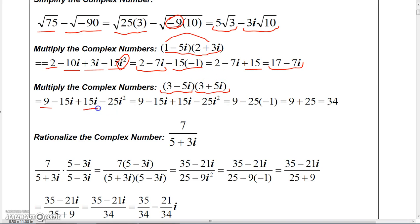And notice that 15i and -15i are going to cancel. Now if I multiply -5i times 5i, I'm going to get -25i².